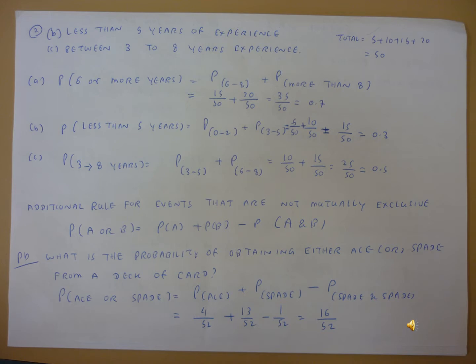The problem is given: What is the probability of obtaining either an ace or a spade from a deck of cards? So we have to calculate P(ace or spade). That will be P(ace or spade) equals P(ace) plus P(spade) minus P(spade and ace).